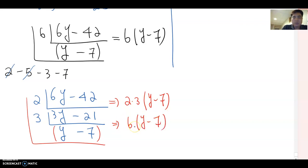So as you see, in both cases, we got the same answer: 6 times (y minus 7). Of course, it may be better if you just find out the greatest common factor at once. But if not, you can do it step by step, easy numbers first, and then gradually using the other numbers.